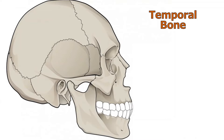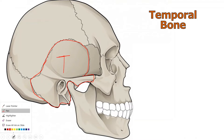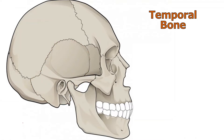The temporal bone — we know where it is. It includes all the parts being highlighted here. It's good to spot it outside of the skull as well, and we'll see that momentarily. Let's go figure by figure and learn about the specific parts of the temporal bone.